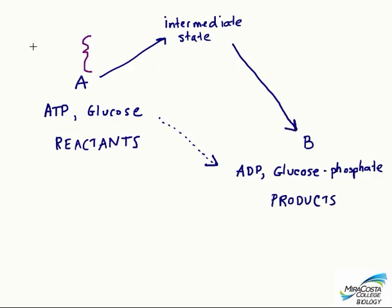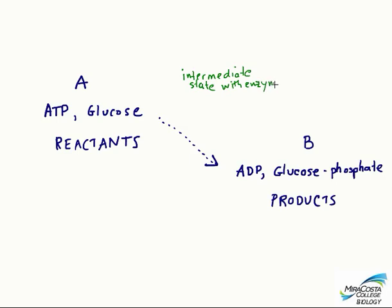In the absence of an enzyme, it would be practically impossible for the reactants to achieve this intermediate state because of the unlikelihood of achieving that level of energy. This relates to the extreme unlikelihood of ATP and glucose bumping into each other in exactly the right way for the bonds to rearrange on their own. What the enzyme does is make that intermediate state much, much more likely to occur — in other words, the enzyme lowers the activation energy.